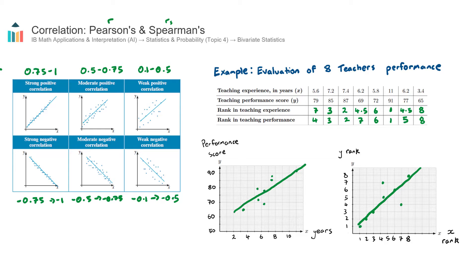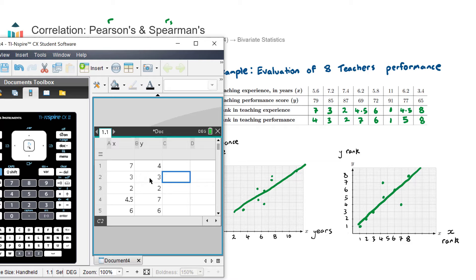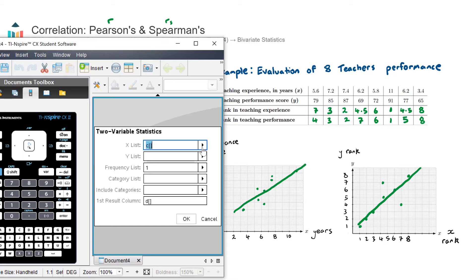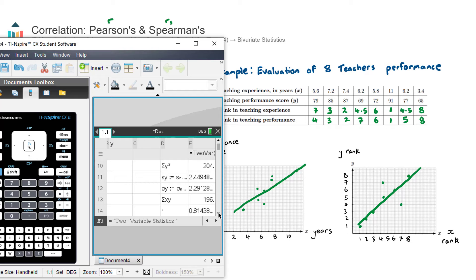Now, to find RS, it's actually the same process as the process we did to find the Pearson's product correlation coefficient. But instead, on the calculator, we actually enter the ranks instead. And that's what I have done there. We then go ahead and perform a two variable stat calculation again. So menu, statistics, stat calculations, two variable stats, select X, select Y. And we get the RS value of 0.814.